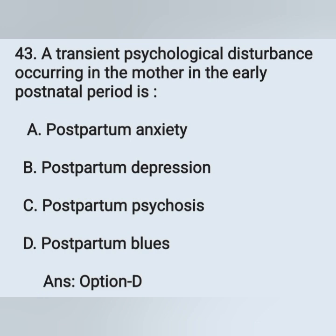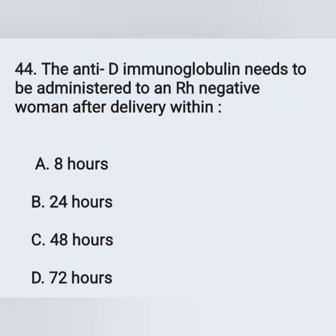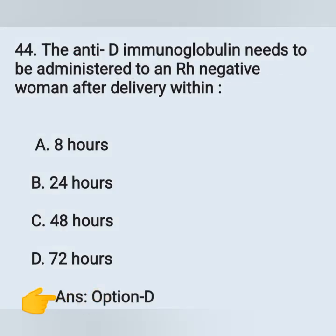Question 44: Anti-D immunoglobulin needs to be administered to an Rh-negative woman after delivery within — options: option A, 8 hours; option B, 24 hours; option C, 48 hours; option D, 72 hours. Anti-D immunoglobulin is administered within 72 hours. Option D is the correct answer.